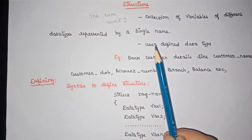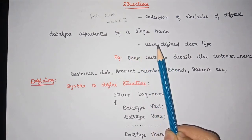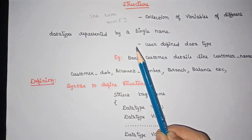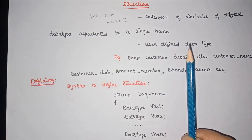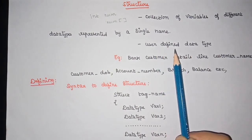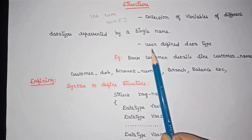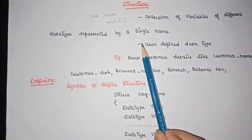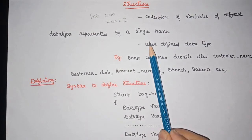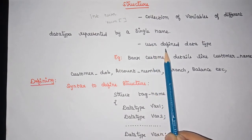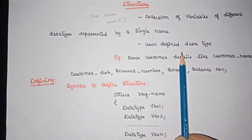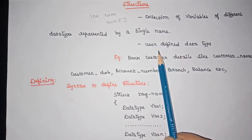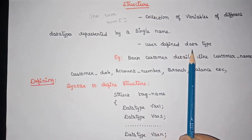Structure means it is a collection of variables of different data types that can be represented by a single name. That is the basic difference between array and structure — array holds a group of items of the same data type, whereas structure holds a collection of data items of different data types. Structure is a user-defined data type, also called a derived data type.